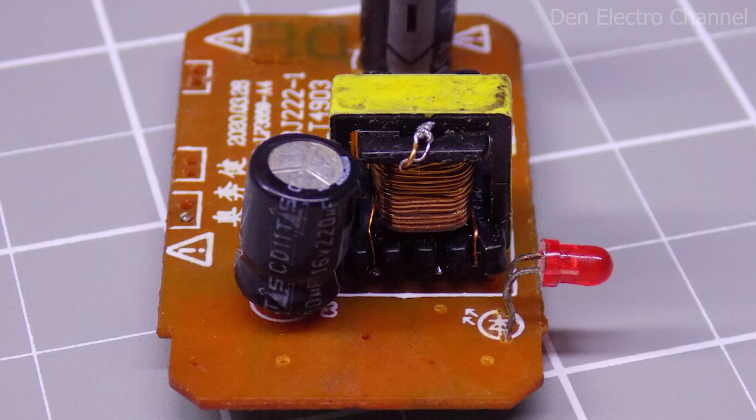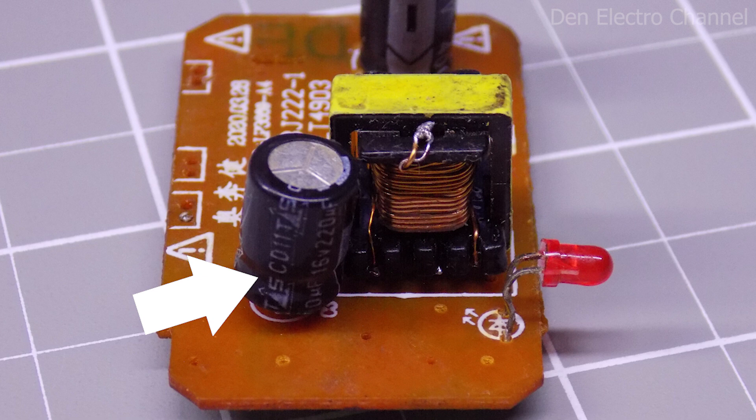After I removed the extra turns, I soldered the transformer onto the board. As I said, I also replaced the capacitor after the secondary winding. I set it to 16 volts at 220 microfarads. Please note that it must be replaced immediately. Since my capacitor was initially set at 10 volts, and I made the output voltage 12 volts, the old one could immediately explode after switching on. Therefore, first change the capacitor to one with a known higher voltage. And then you start soldering the transformer with a rewound winding.